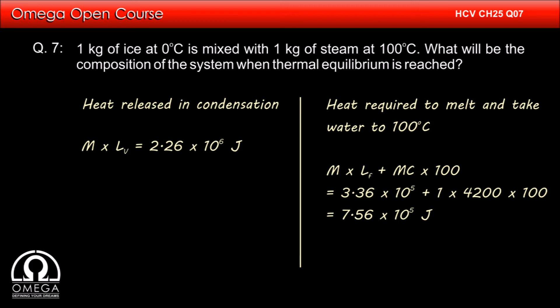As we can see, the heat required to melt the ice and heat the water formed to 100 degree celsius is far less than the amount of heat released in condensing the steam. So, at the equilibrium, some of the steam condenses and all the ice melts and water formed is at 100 degree celsius.